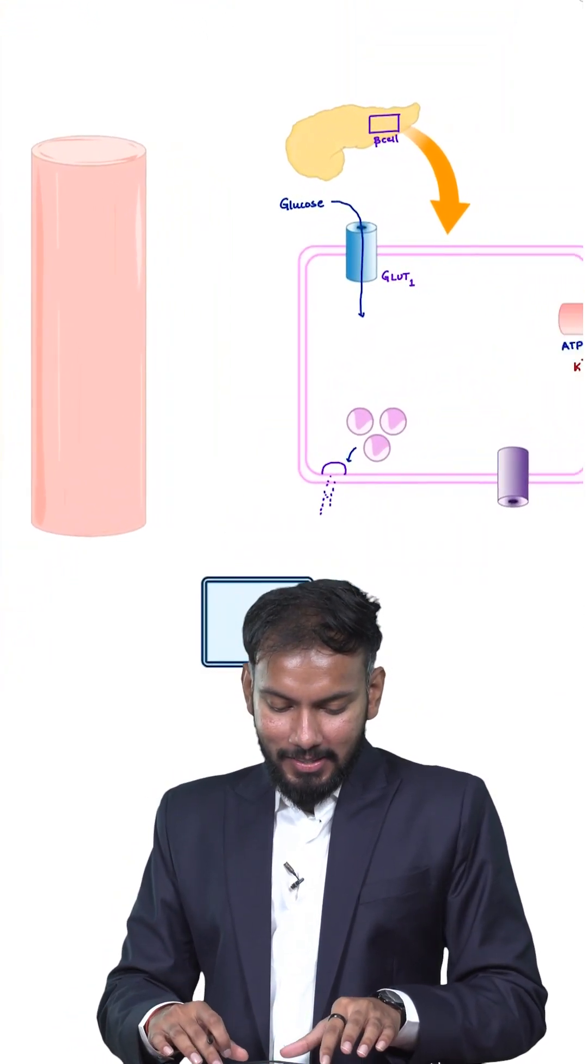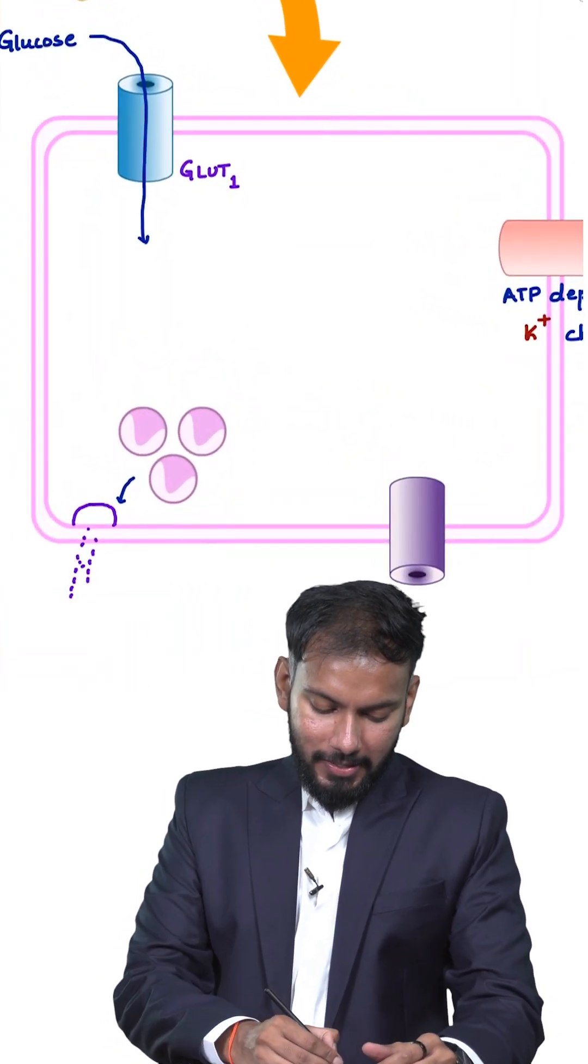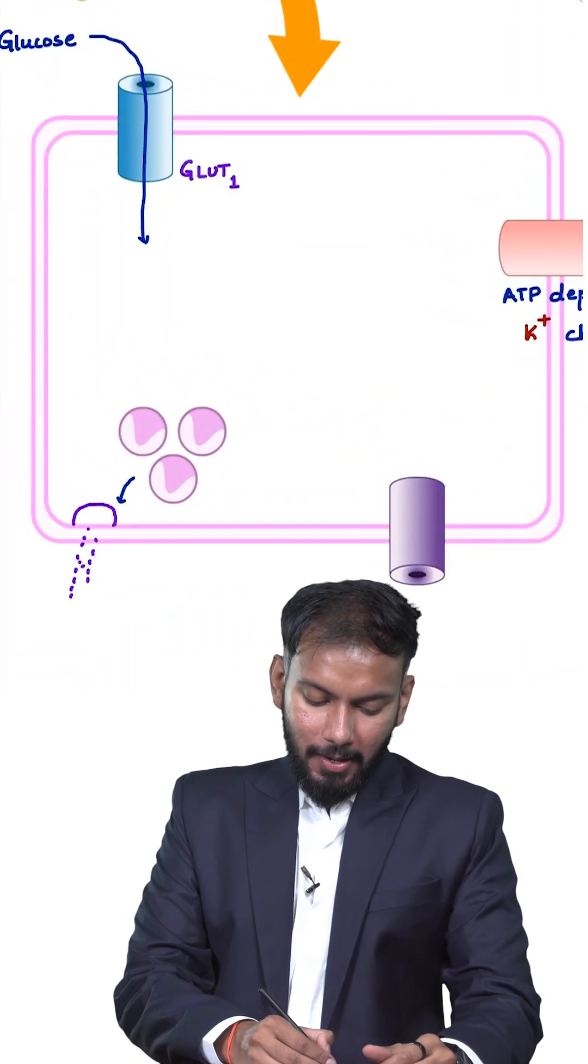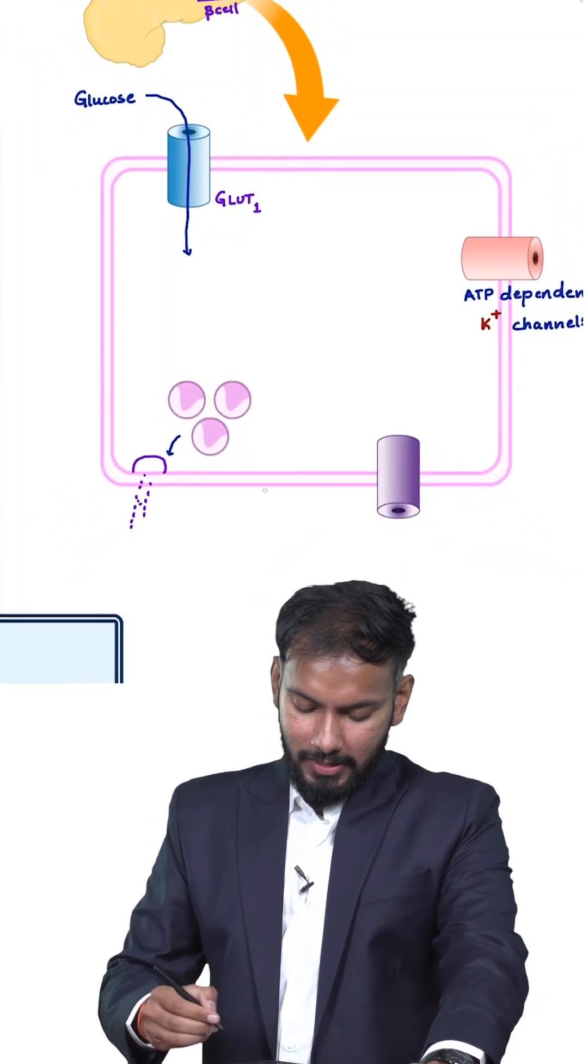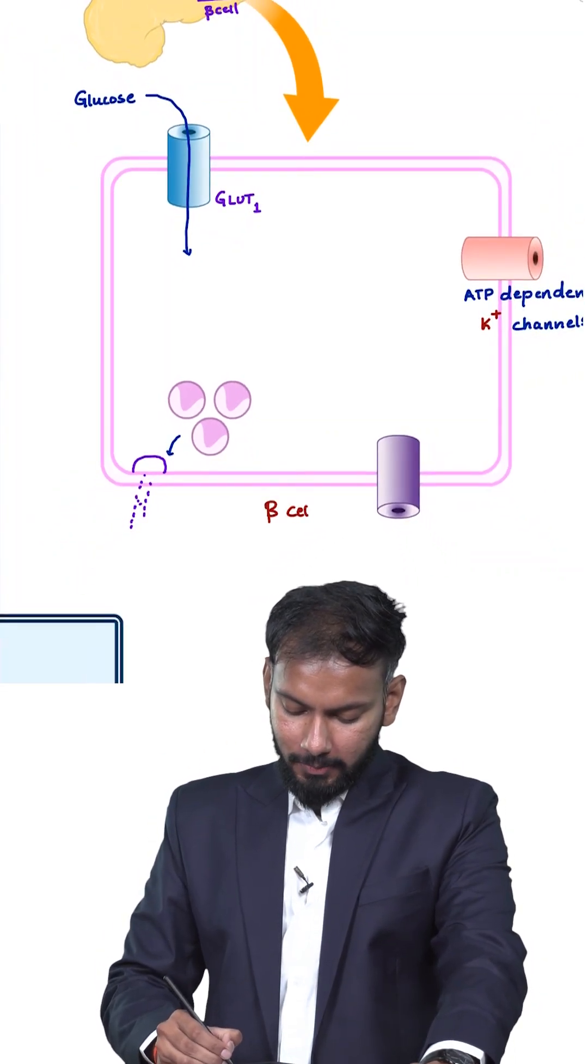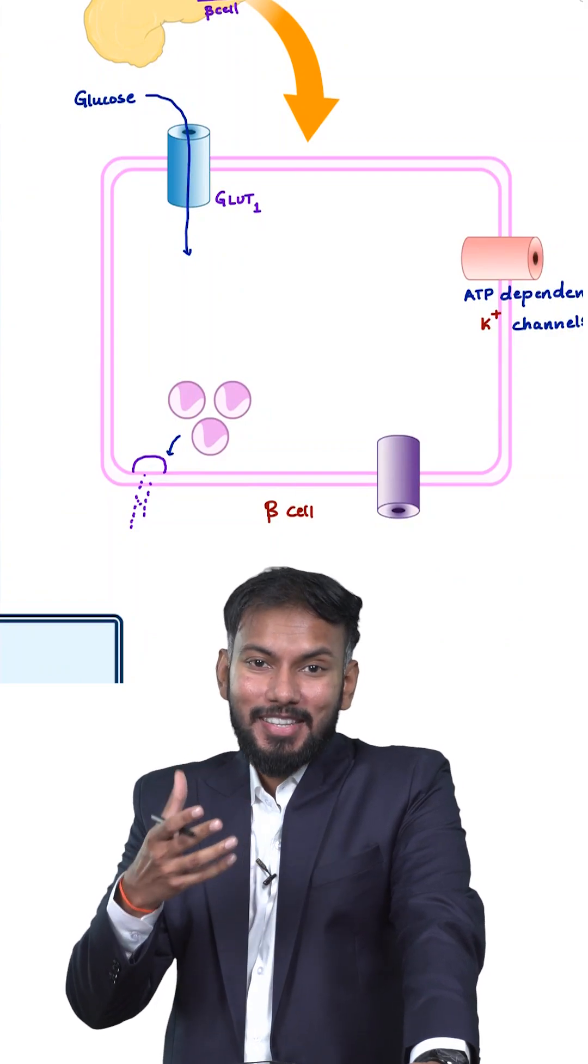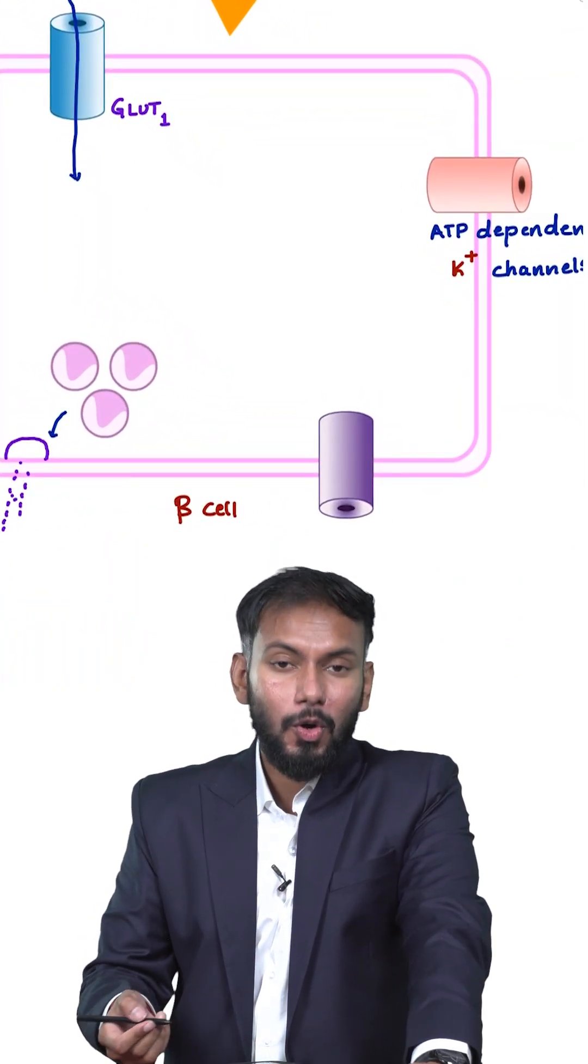Yes, let us suppose this is pancreas and there is a beta cell in the pancreas. That is what I've zoomed here. This is the beta cell of pancreas and inside this beta cell of pancreas, there is a channel called the potassium channel.